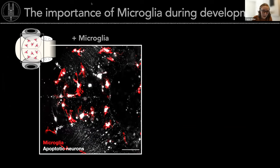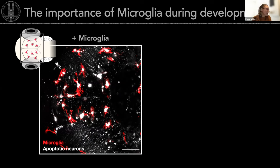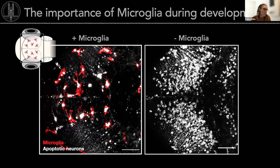Microglia are the macrophages of the brain. You can see them in this image in red. These cells move around in the brain and collect all the dead cells — shown here in gray — in a process called phagocytosis. Here you can see an example in a zebrafish brain. Dead cells and microglia are all around, and we know how important they are because if you remove the microglia, you have a brain full of dead cells.